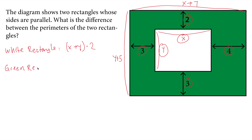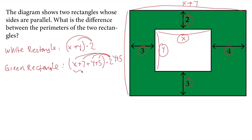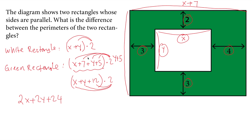The green rectangle's perimeter will be 2 times (x plus 7 plus y plus 5). Distributing the 2, we can simplify this to 2 times (x plus y plus 12), which gives us 2x plus 2y plus 24.